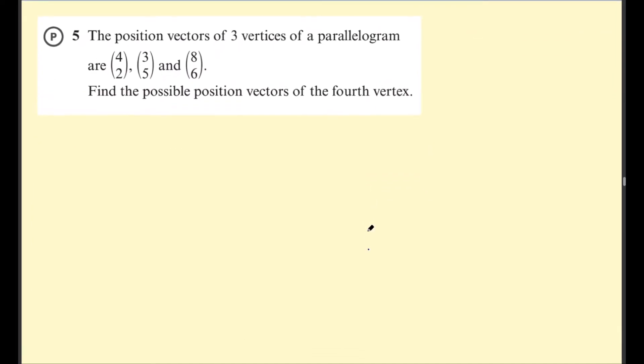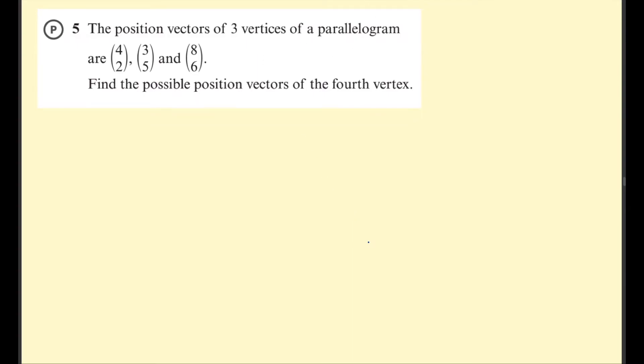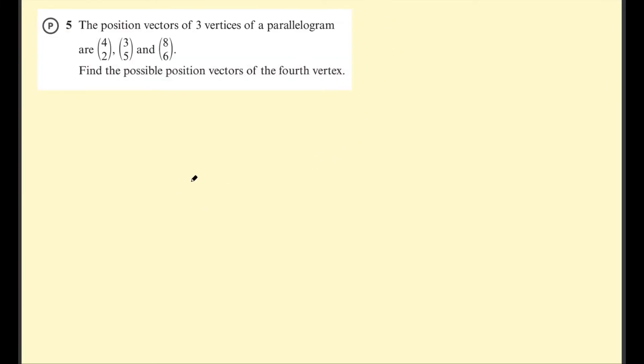And let's do one more. So this question says the position vectors of three vertices of a parallelogram are (4, 2), (3, 5), and (8, 6). Find the possible position vectors of the fourth vertex. So let's again draw a little diagram and plot these points. So we've got a point at (4, 2) which would be something like here, (3, 5) maybe about here, and (8, 6) something like that.